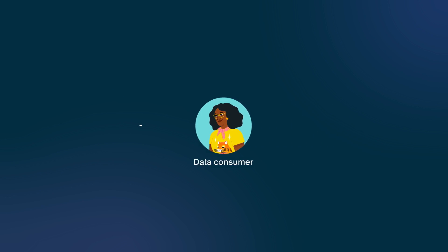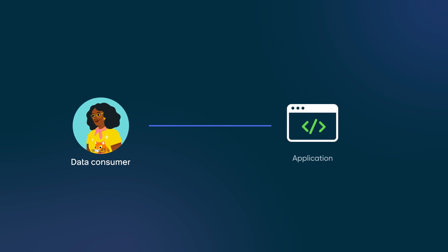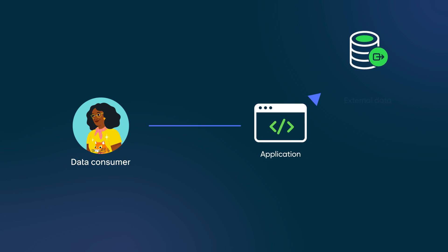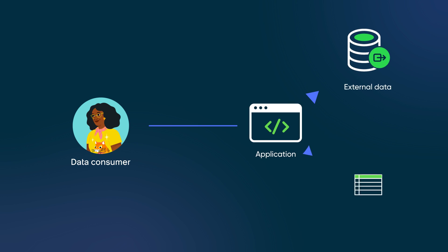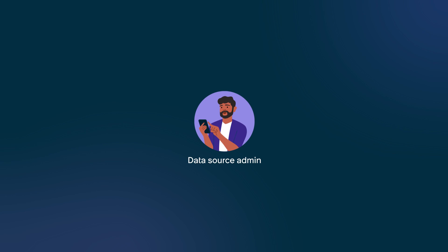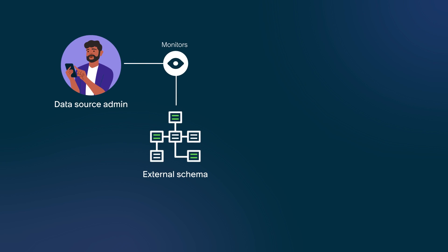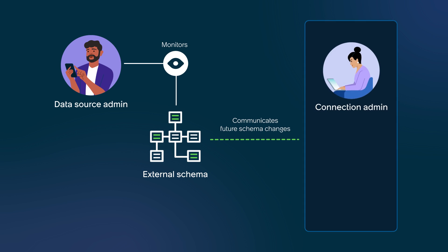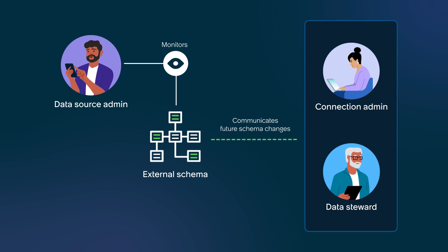The data consumer begins developing a new application and accesses the data fabric table and its external data in real time, just like any table on the ServiceNow AI platform. The data source administrator monitors the external schema for consistency and communicates future schema changes to the connection administrator and data steward.